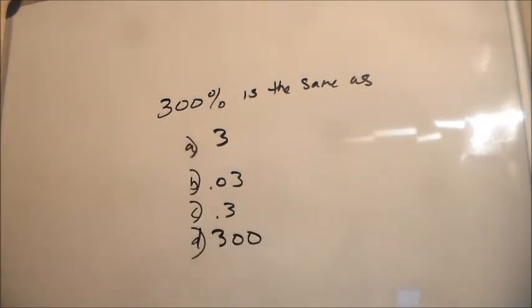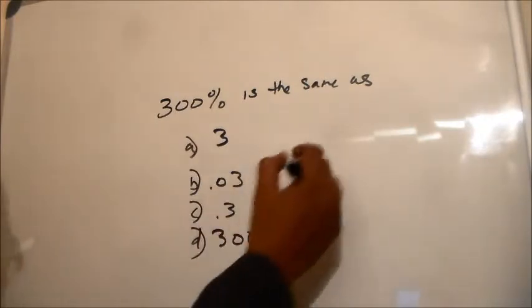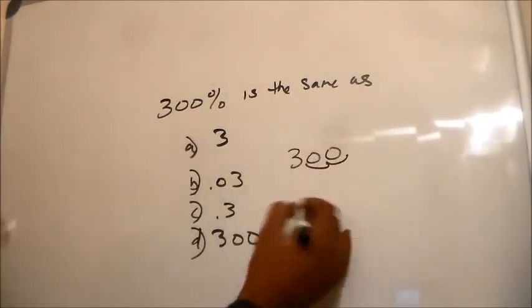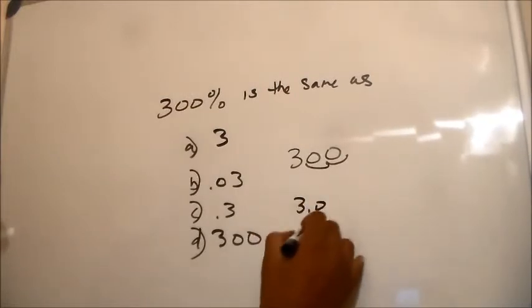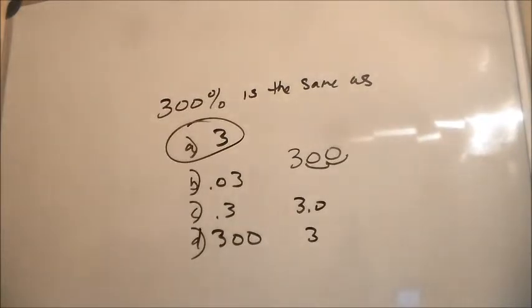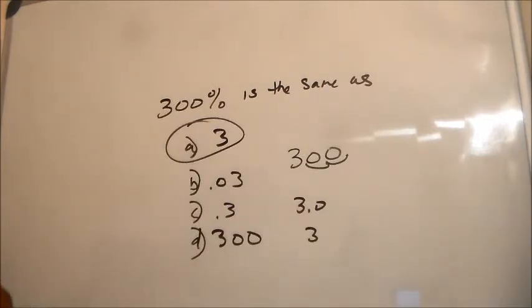How I would solve this: just look at the number three hundred and move the decimal over one, two spaces, and that would be three point zero, or three. Our answer is A. It's not point zero three, and it's not point three.